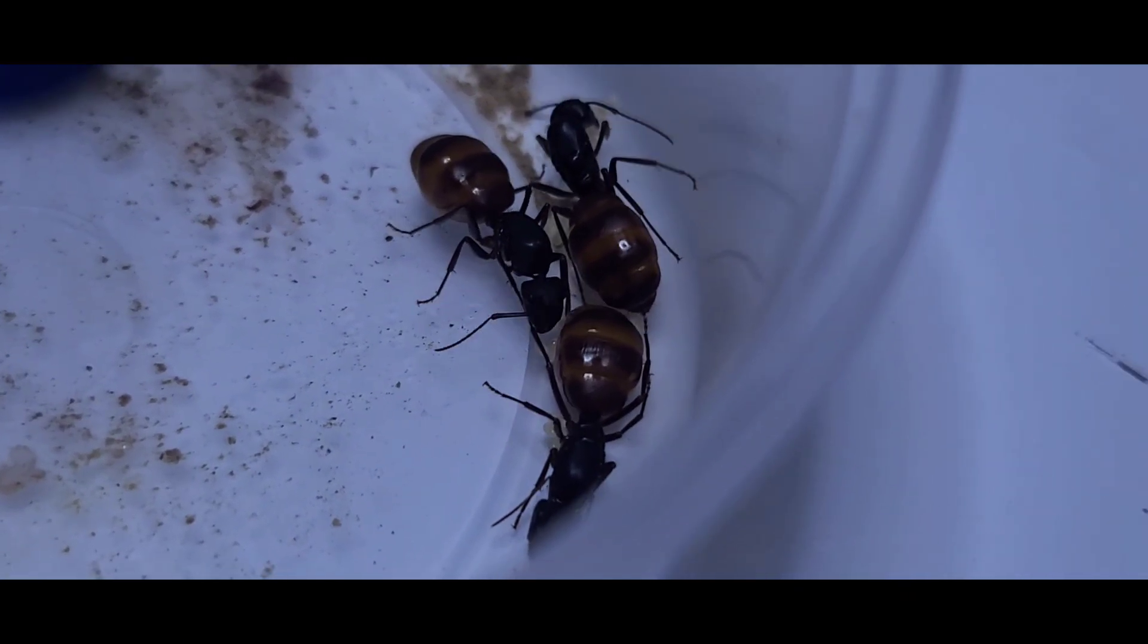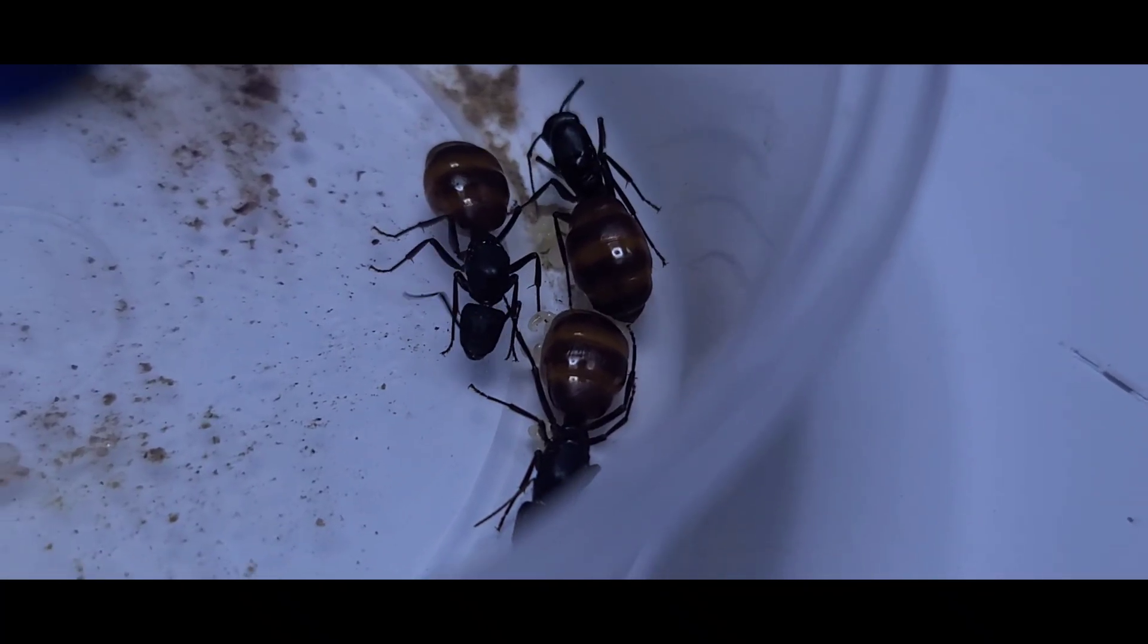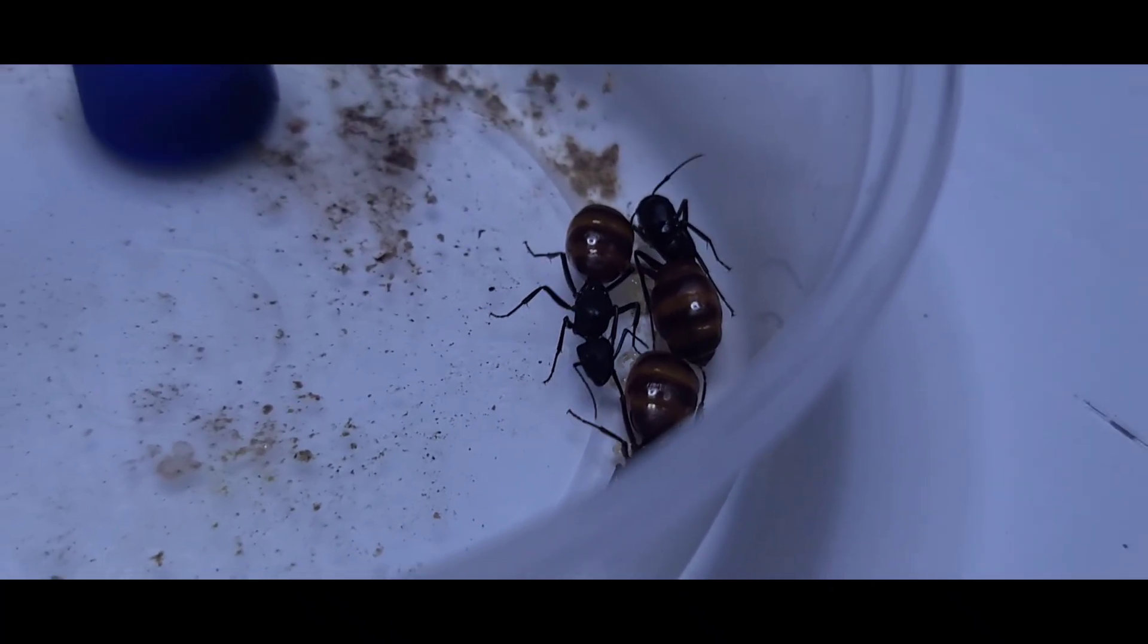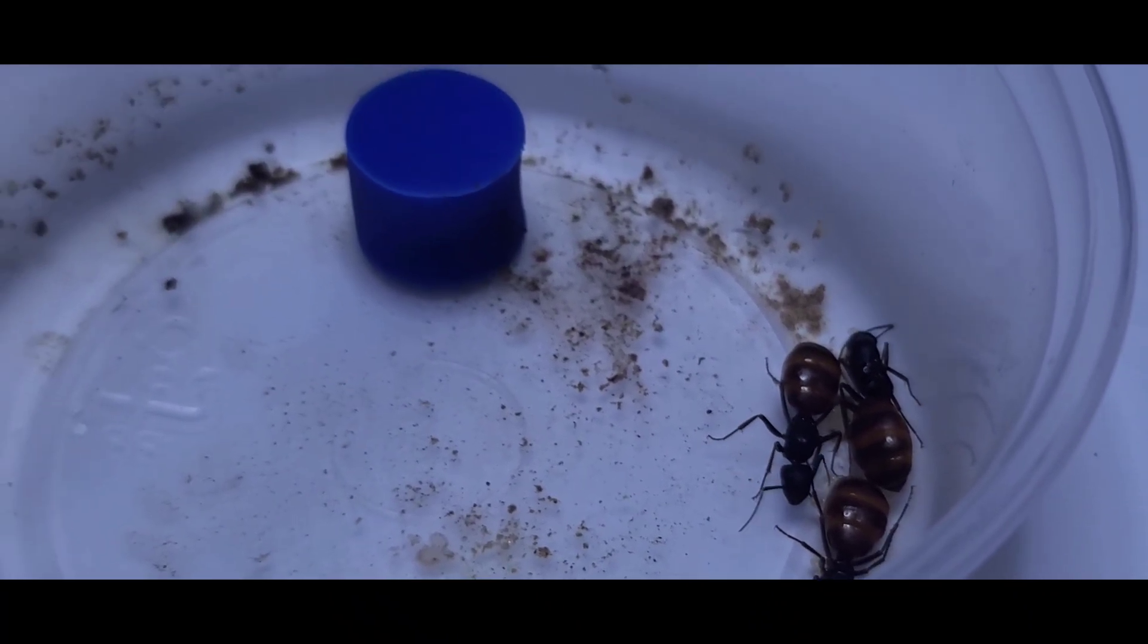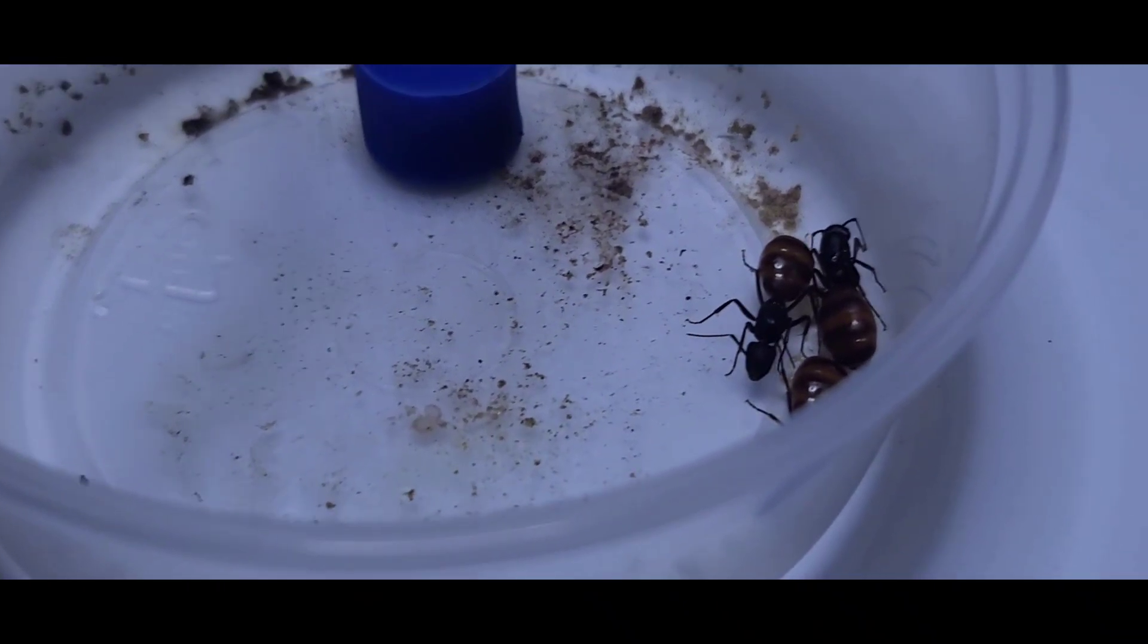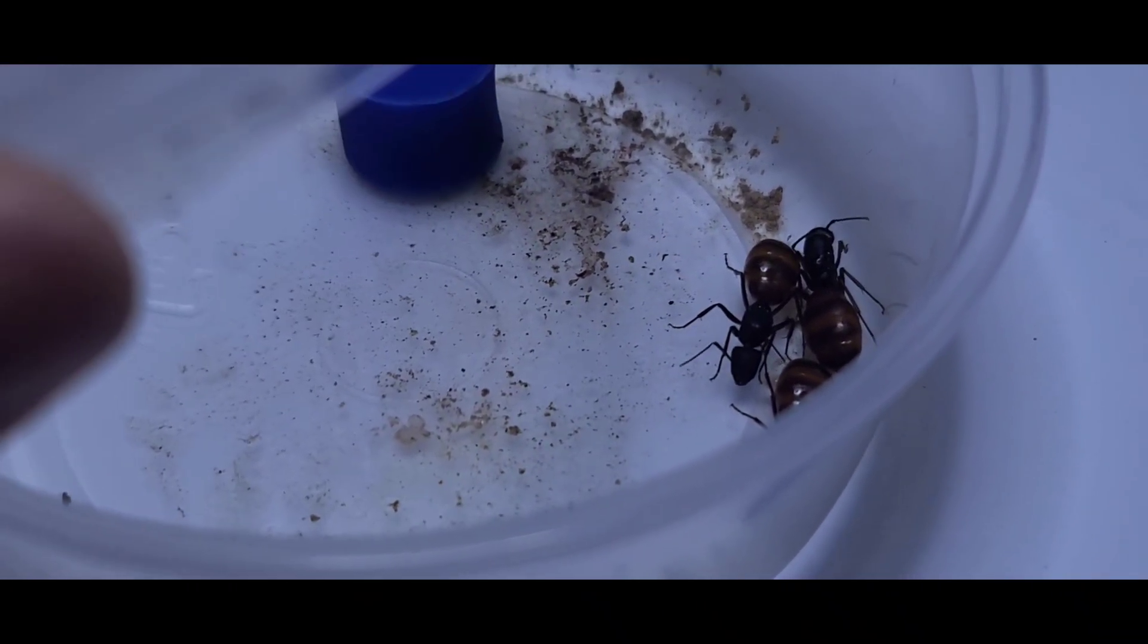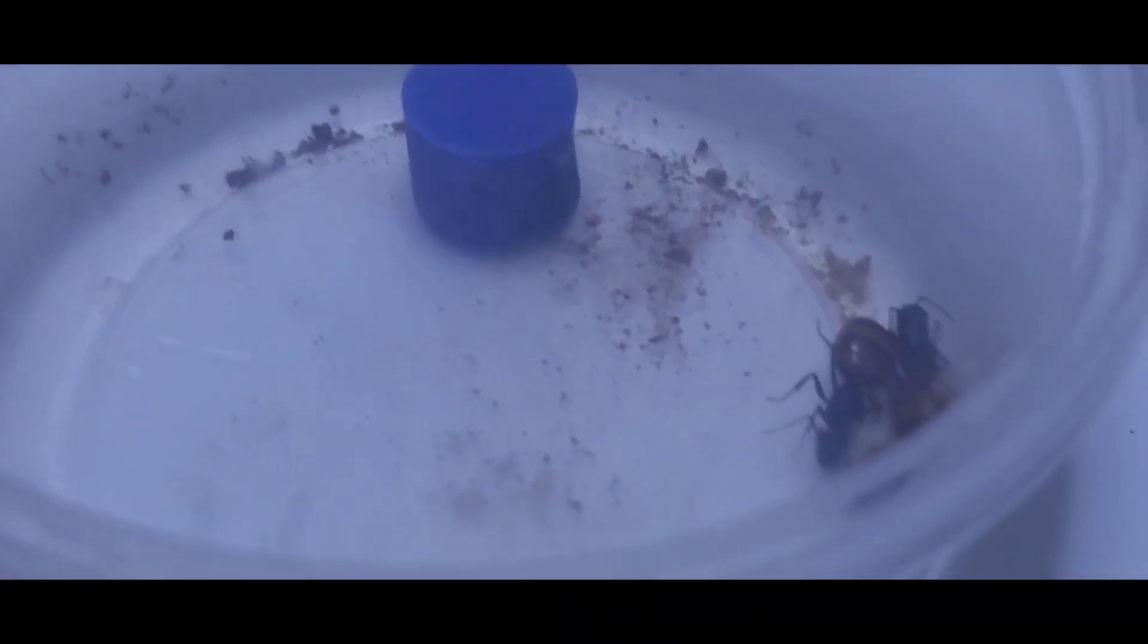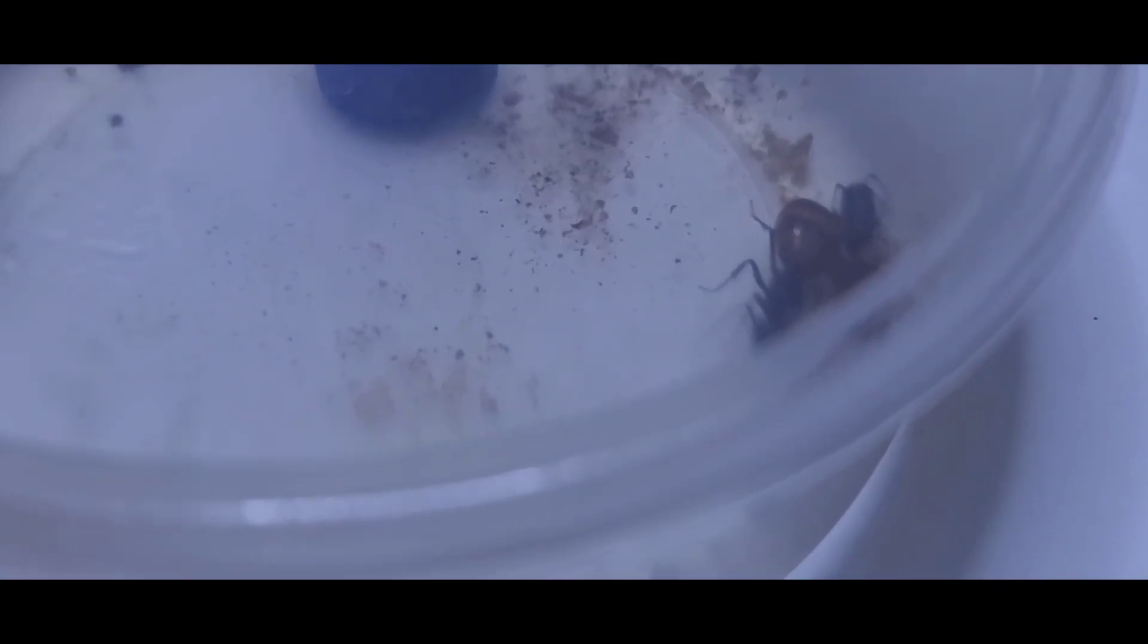When you first receive a colony, this is how it's supposed to look. The first thing you need to do is let them be and keep them in a dark place.